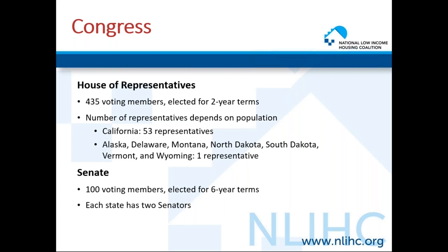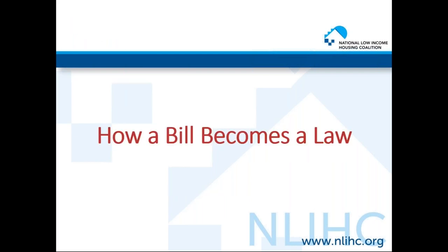Each representative covers a geographic district, which varies in size depending on how many people live in an area. The second chamber of Congress is the Senate, which is a smaller body comprised of 100 voting members elected for six-year terms. Each state has two senators, which means that almost every American has two senators and one representative. There are not senators for D.C. residents or Americans who live in U.S. territories. If you're participating in Hill Day, most of you should be doing three meetings — one with each of your members of Congress. The two bodies of Congress are responsible for creating laws. I'm now going to turn it over to Elena, who will walk through how a bill becomes a law.